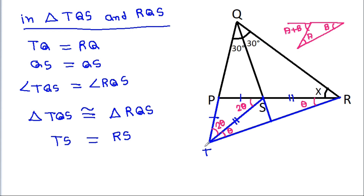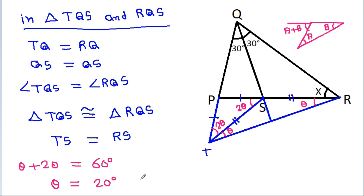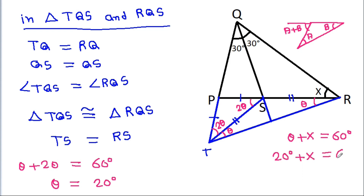Since triangle tqr is equilateral, theta plus 2 theta must equal 60 degrees, so we get theta is equal to 20 degrees. Also, theta plus x must equal 60 degrees, so 20 plus x equals 60 degrees, giving x is equal to 40 degrees.